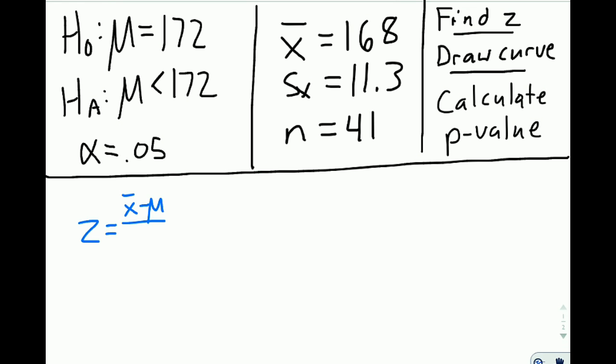The second piece of that is divide that by my new standard deviation, my sampling distribution's standard deviation, which in this case comes from the central limit theorem: s divided by square root of n. We'll fill that in with numbers in a moment. It will be 11.3 divided by root of 41.